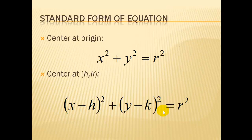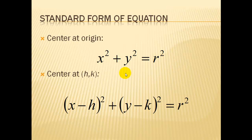Our standard form of the equation is shown here: x squared plus y squared equals radius squared. Since circles are relatively simple, we're going to talk about translating circles now, meaning having the center at places other than the origin. For the remainder of the conics, we'll do translations at the end since they're a little more complex.